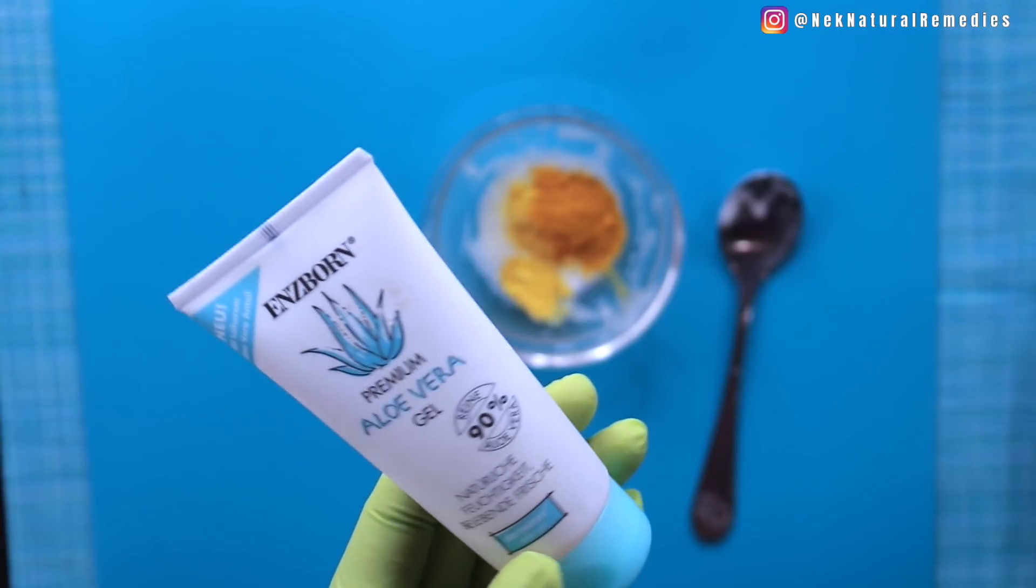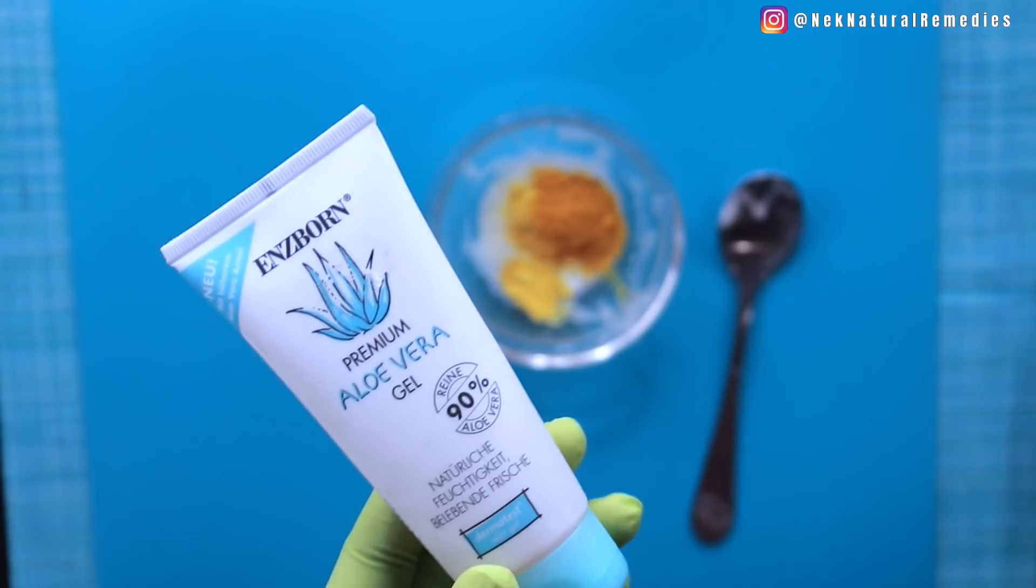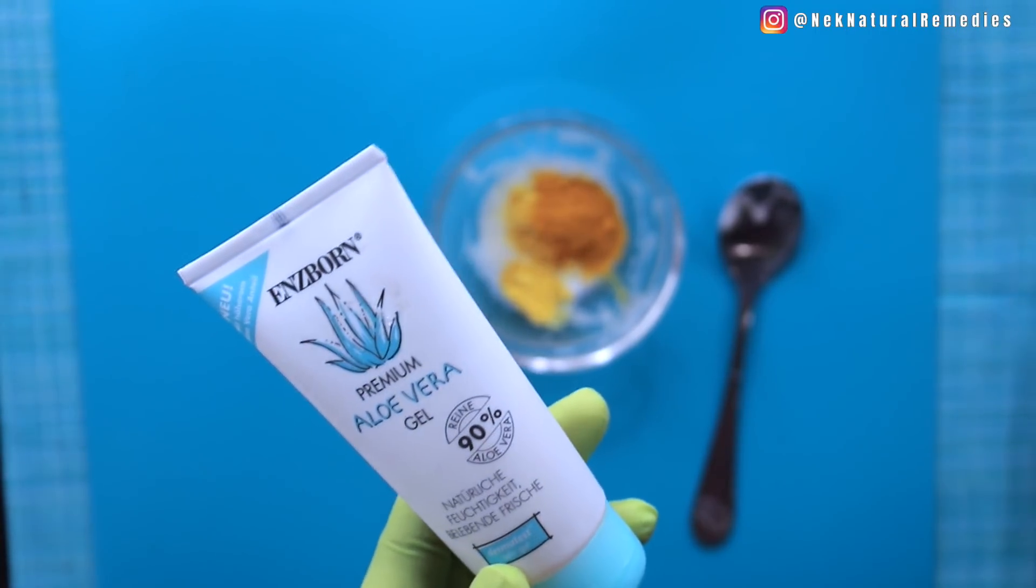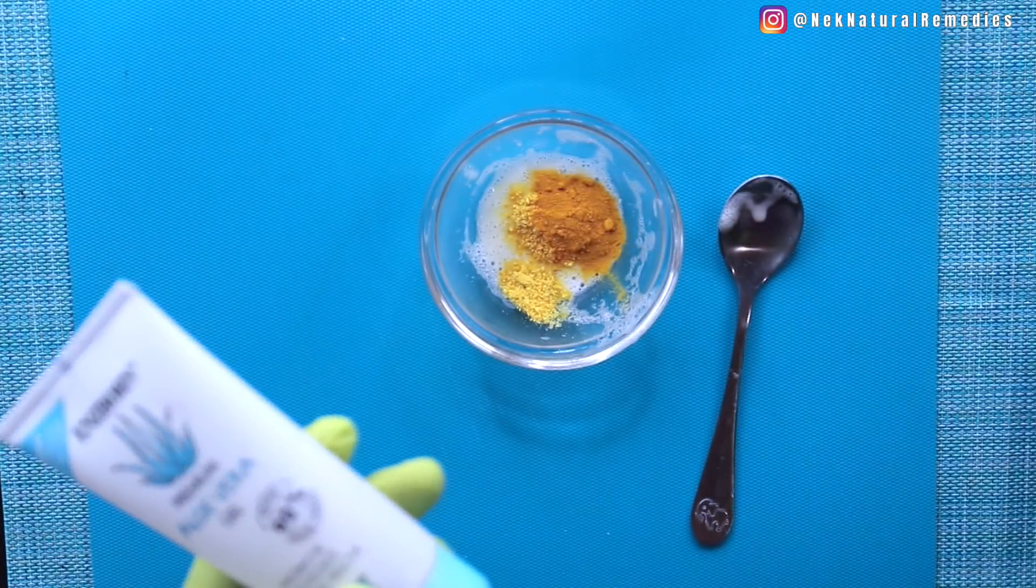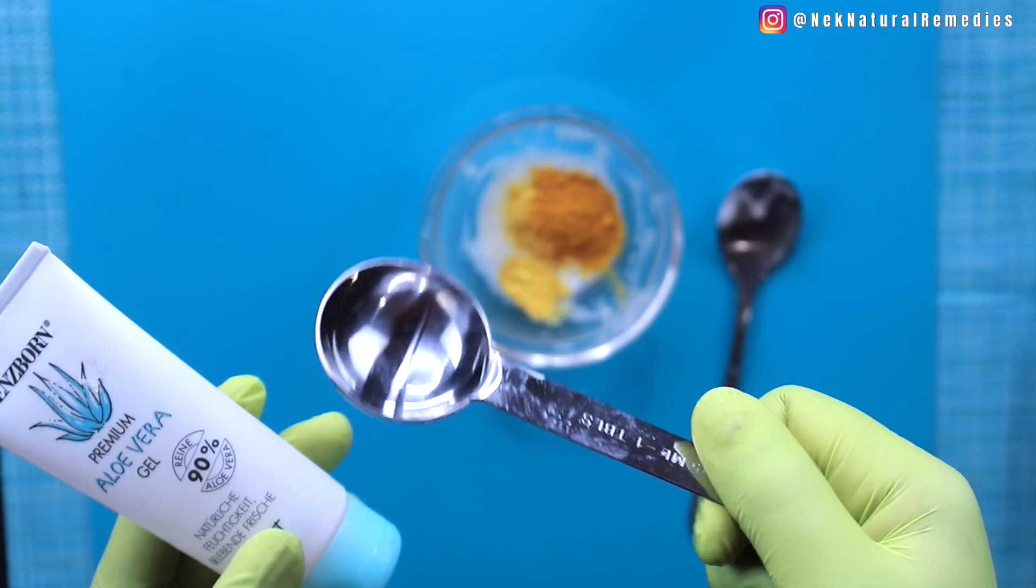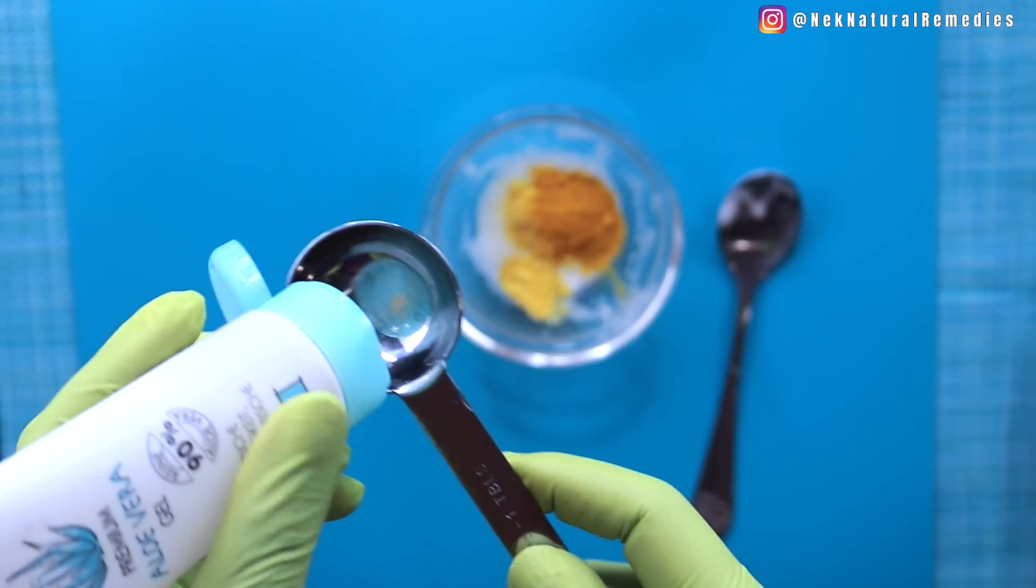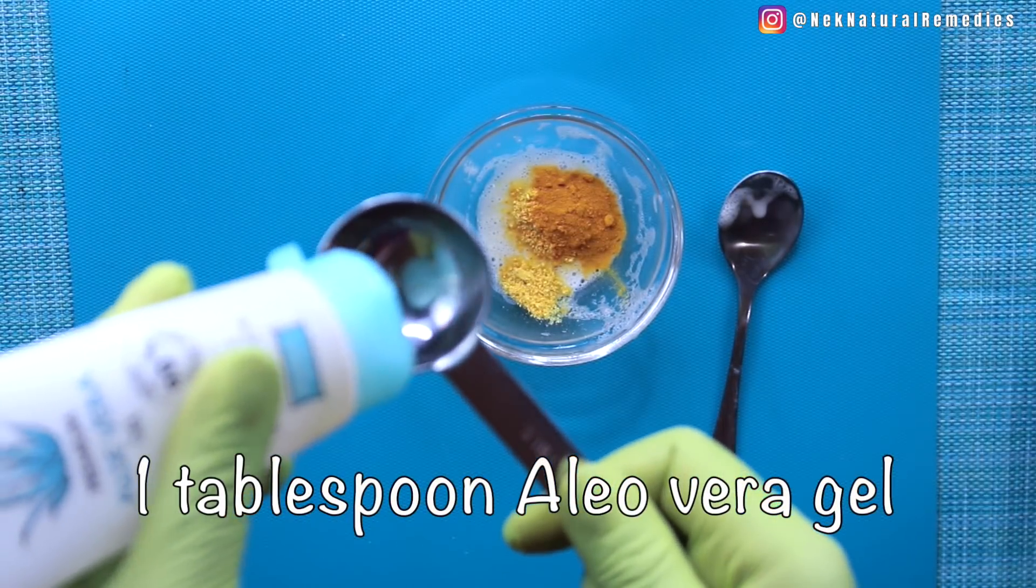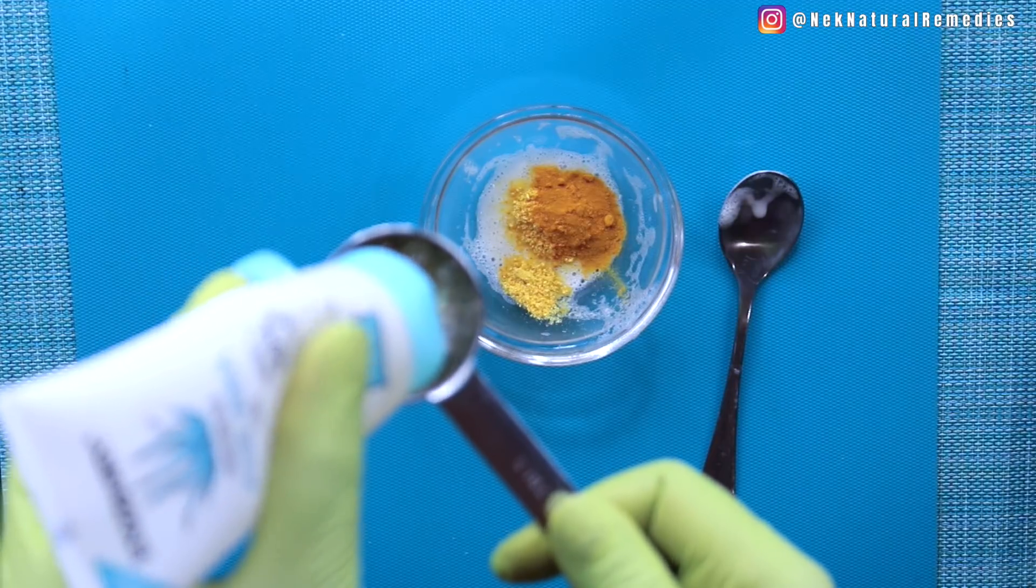Aloe vera gel contains antioxidants, enzymes, vitamin A and vitamin C, and it is highly anti-inflammatory. It helps treat acne spots, helps fade dark spots and hyperpigmentation. It also helps make your skin soft and fresh. It also adds glow to your skin. Here I'm using one tablespoon of aloe vera gel.